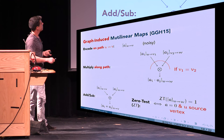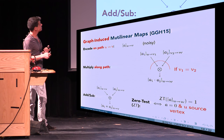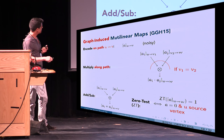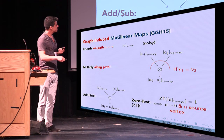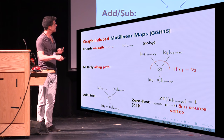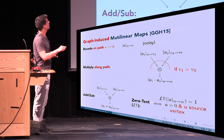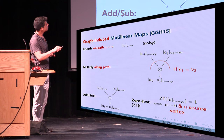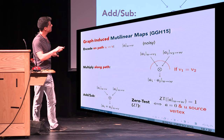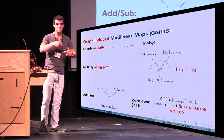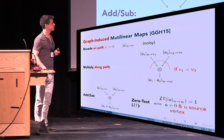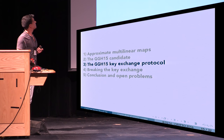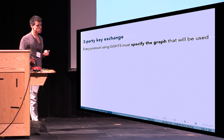To summarize: in the graph-induced multilinear maps, you encode relative to a path. It's a noisy encoding. You can add or subtract encodings for the same path, zero-test (the zero-test is one if the element encodes zero and u is the source vertex), and multiply along compatible paths — if path u→v1 and path v2→w with v1=v2 are both encoded, multiplying gives an encoding for path u→w.